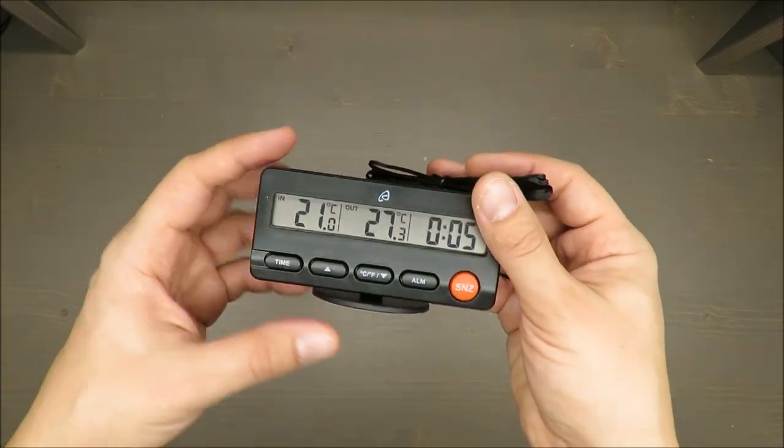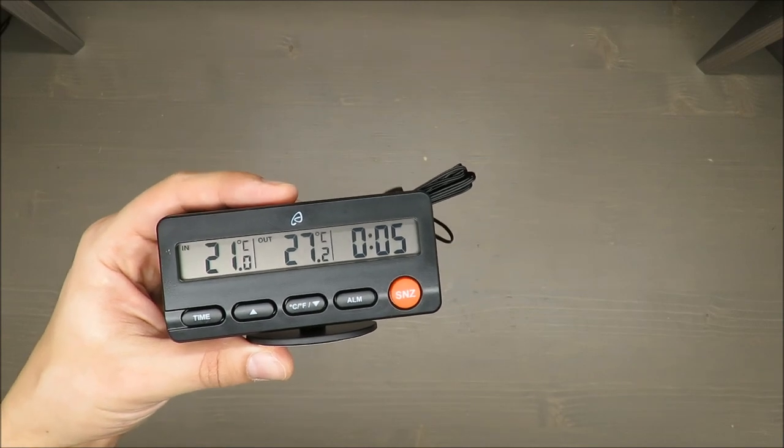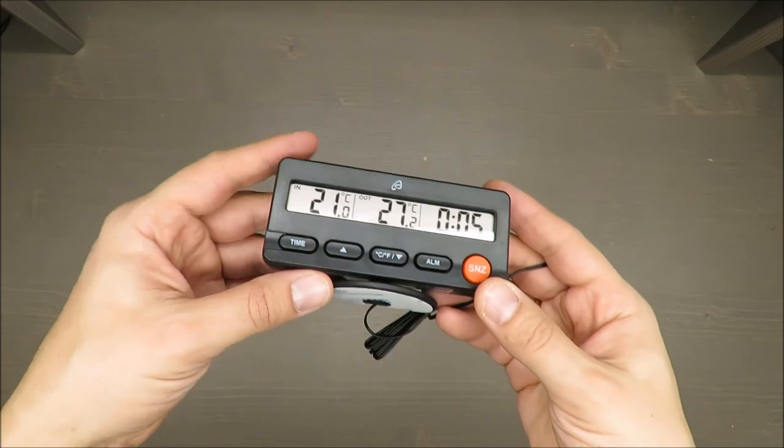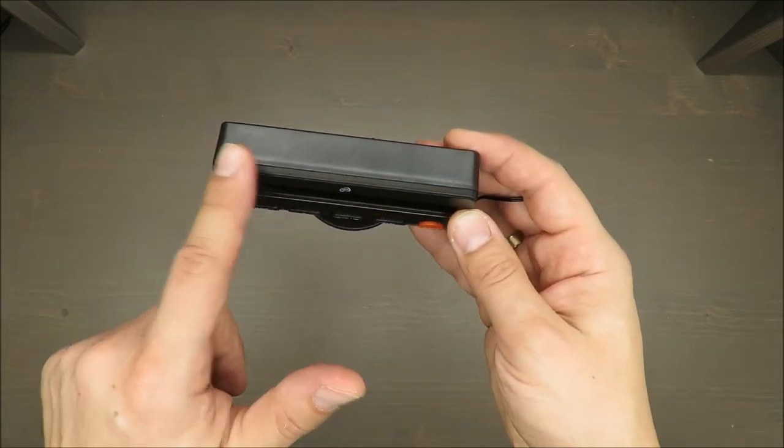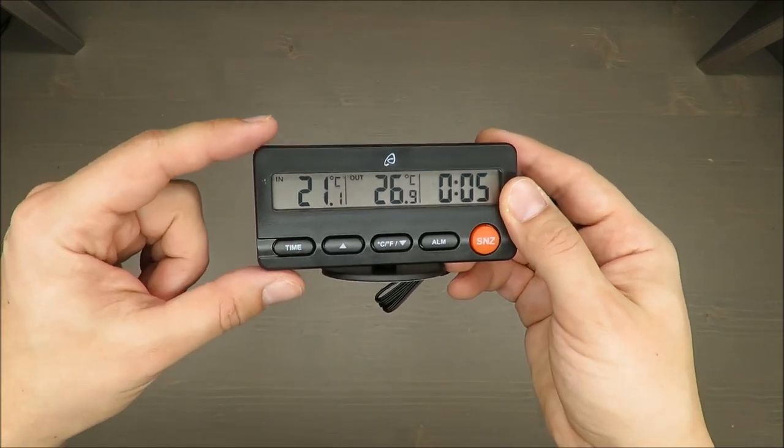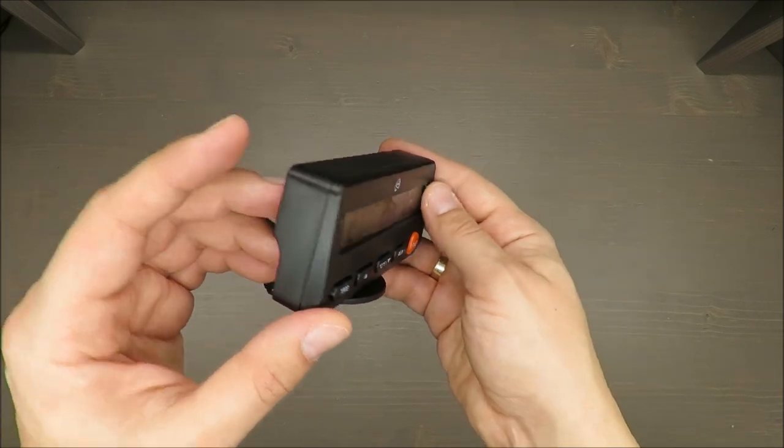So what you are paying for is a very compact, small digital thermometer. The dimensions are 11 centimeters by 5.8 centimeters by 3.6 centimeters, so very small.